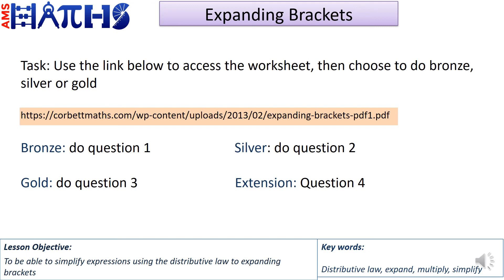Now I'd like you to use the link below to access the worksheet. Choose bronze, silver, or gold: bronze means question 1, silver means question 2, and gold means question 3. The extension task is question 4. Once you have finished, mark your work using the answers link provided, then submit to Show My Homework so I can check your progress. If you need any assistance at any point during the lesson, please send me a message and I will respond as soon as I can. Thank you.